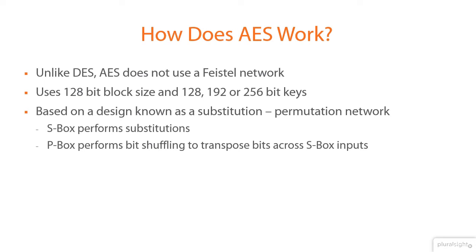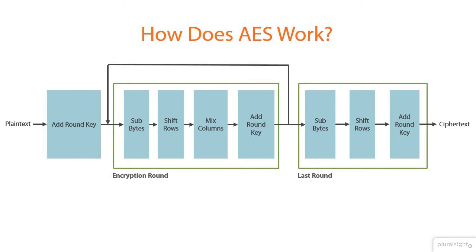One of the principal design goals of AES was to keep it simple to implement in both hardware and software. AES works by repeating the same defined steps multiple times, which are called rounds. Each round consists of several processing steps, including one that utilizes an encryption and decryption sub-key that is generated from the shared key. The key size used for an AES cipher specifies the number of repetitions of transformation rounds that convert the input plaintext into the final output ciphertext.